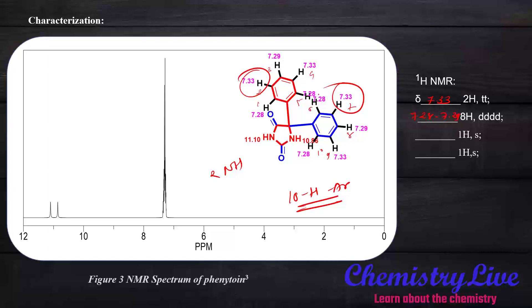The doublet splits again into a doublet of doublet of doublet, which is a unique signal. The two N-H protons have different chemical shift signals even though they are both N-H groups, because the 3D environment is completely different for each N-H. One N-H is closer to the benzene ring and appears at lower ppm — δ 10.36 — while the other N-H is further from the benzene ring and subject to two inductive effects, appearing at higher ppm — δ 11.10.